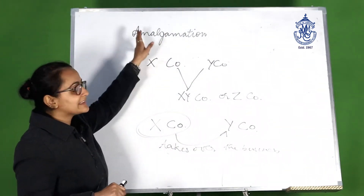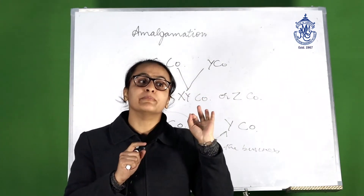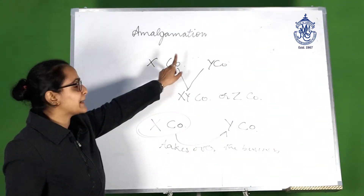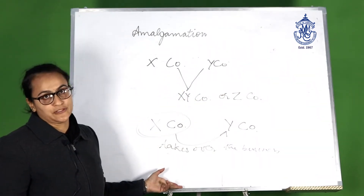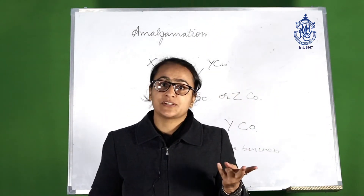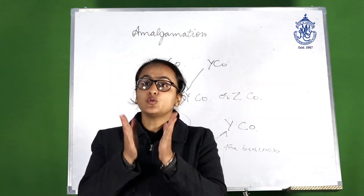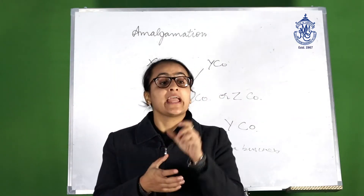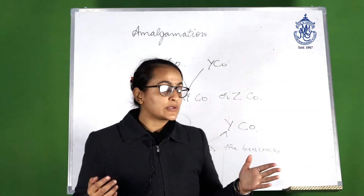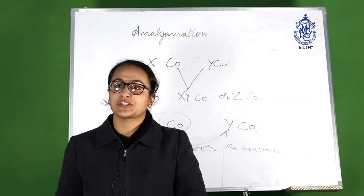Coming to the main topic — amalgamation is of two types: first, in the nature of merger, and second, in the nature of purchase. In the nature of merger is when X and Y company merge, and in the nature of purchase is the case of absorption. As per Accounting Standard 14, we follow both these amalgamations. For amalgamation in the nature of merger, we follow the method of pooling of interest. As per AS-14, there are five conditions to be fulfilled.